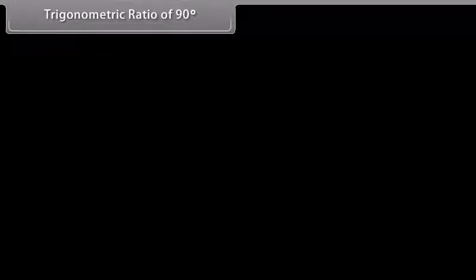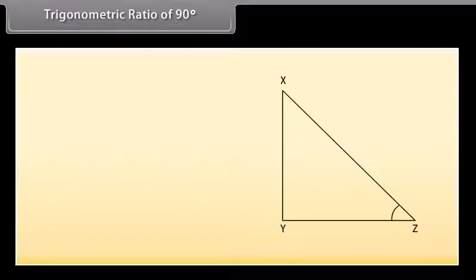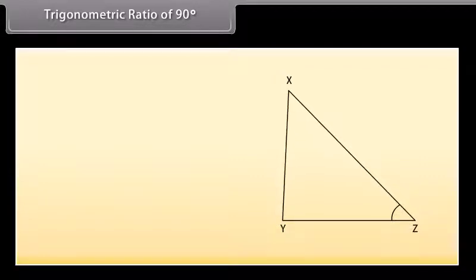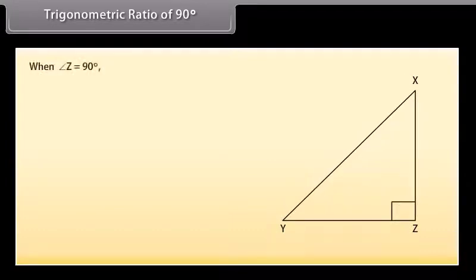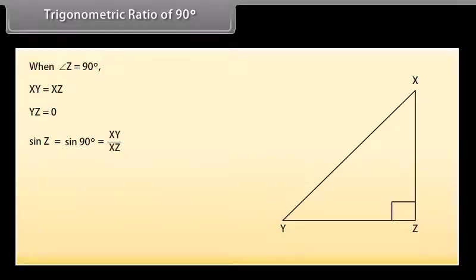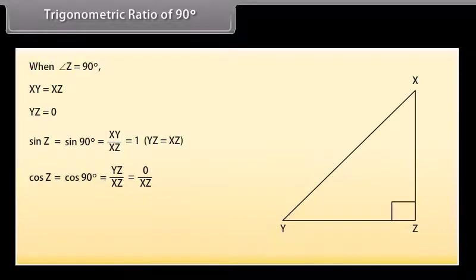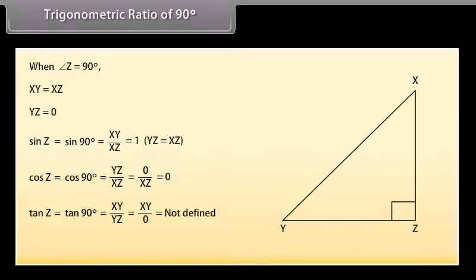Trigonometric ratio of 90 degrees: Consider a right-angled triangle XYZ. Increase the measure of angle Z slowly — XZ rotates right and becomes steeper. When angle Z is increased to 90°, XZ merges with XY and the length of YZ becomes 0. Therefore: sin 90° = XY/XZ = 1 (since XY = XZ), cos 90° = YZ/XZ = 0/XZ = 0, and tan 90° = XZ/YZ = XZ/0, which is undefined. Let us summarize these values in a table.